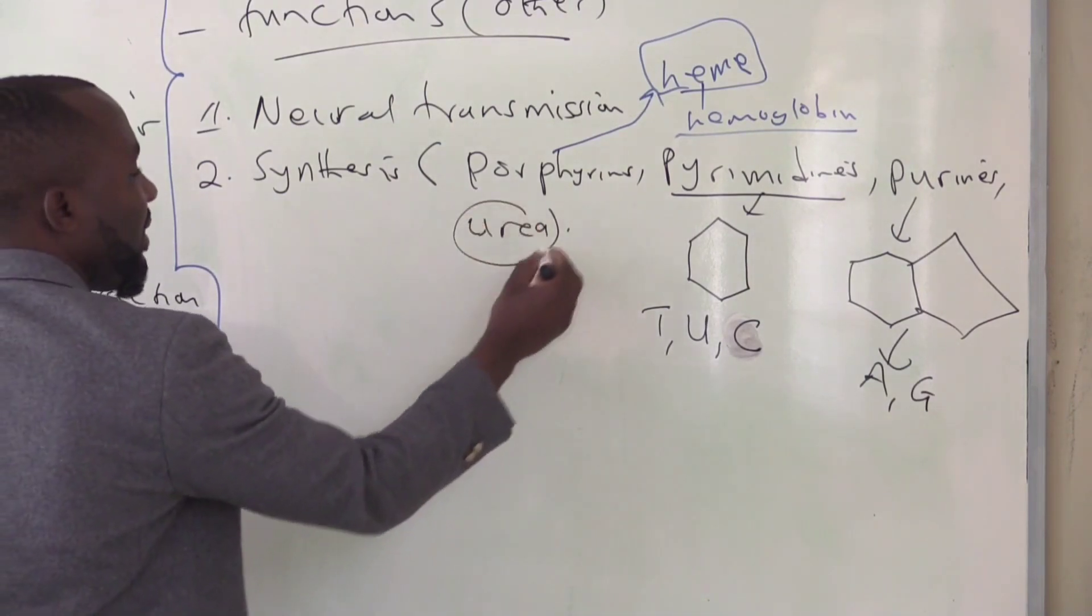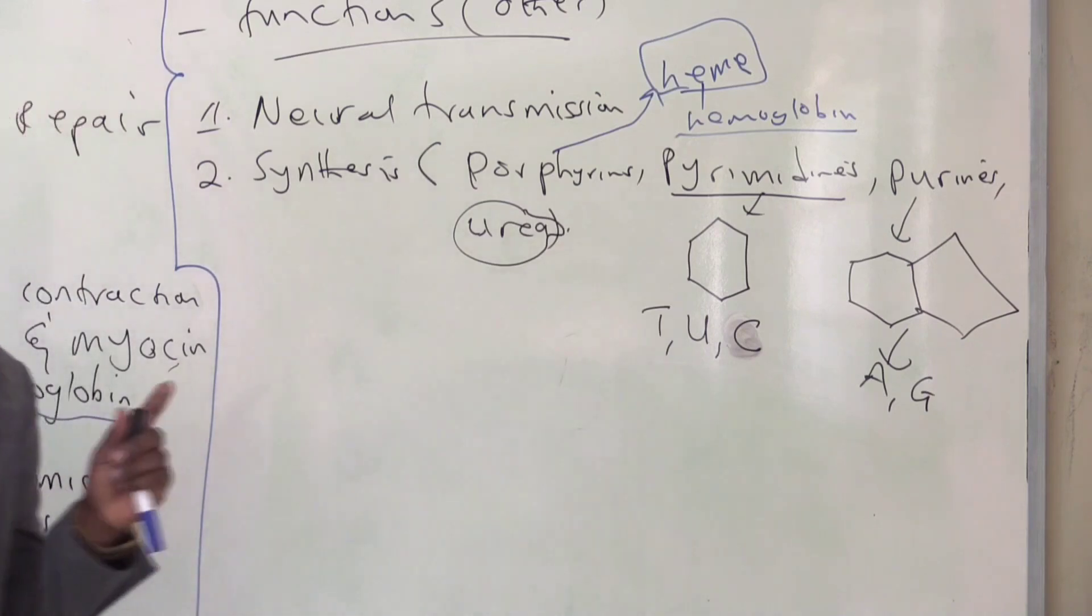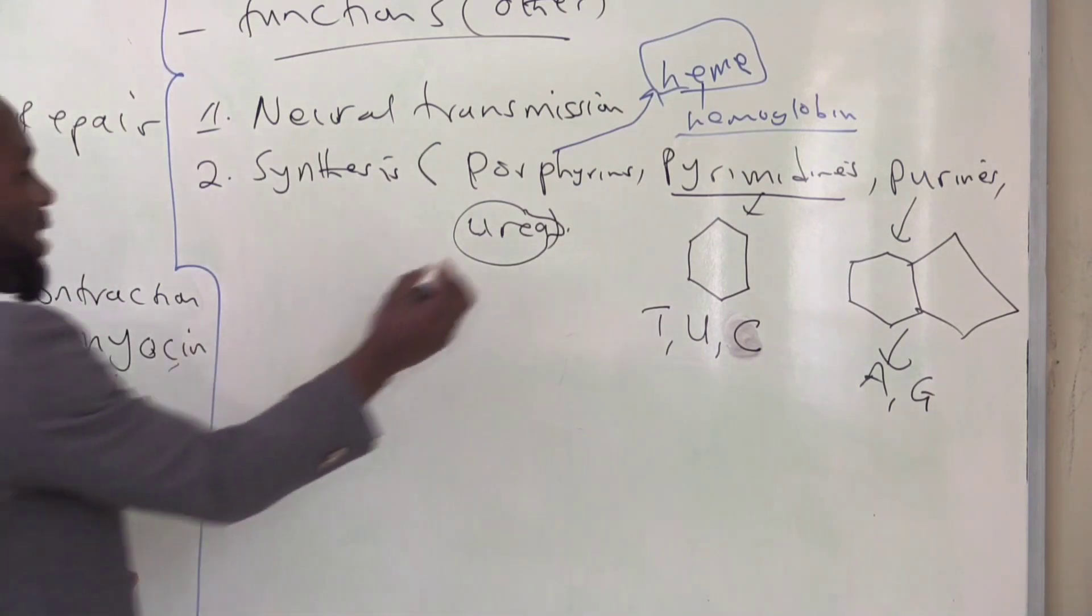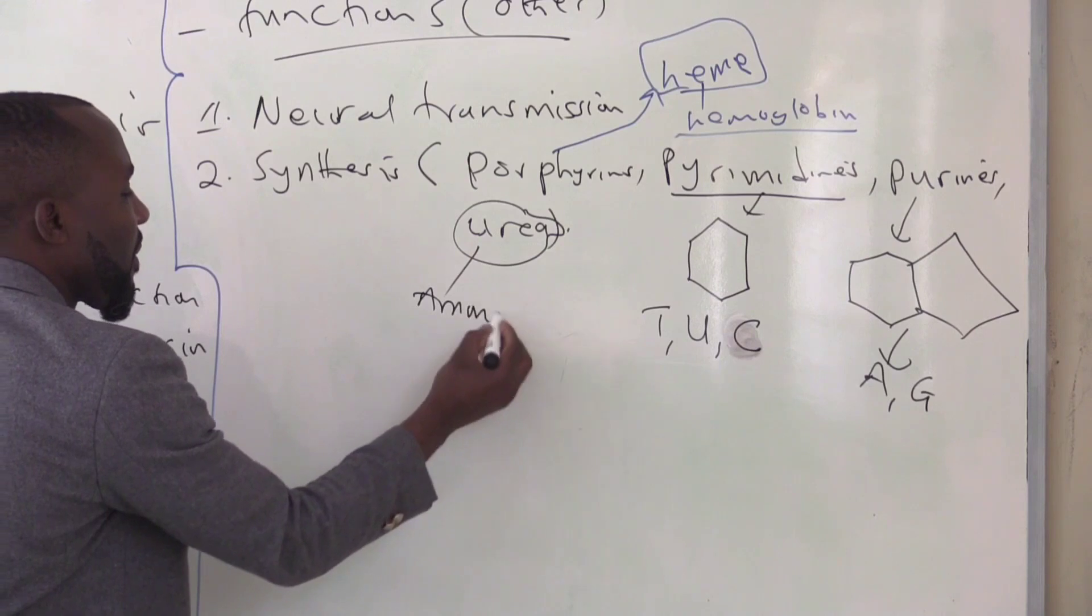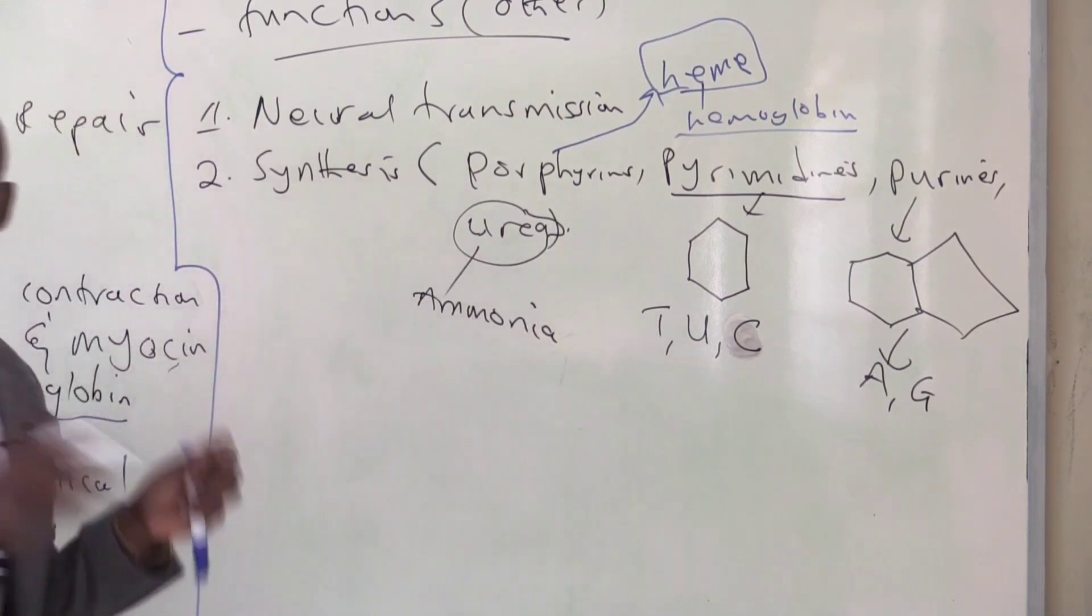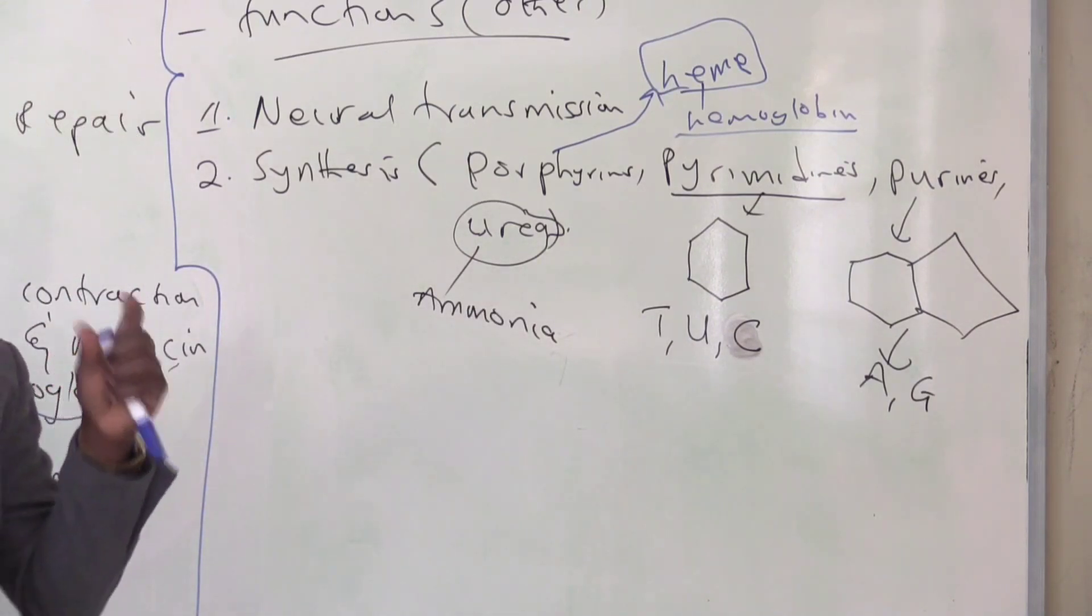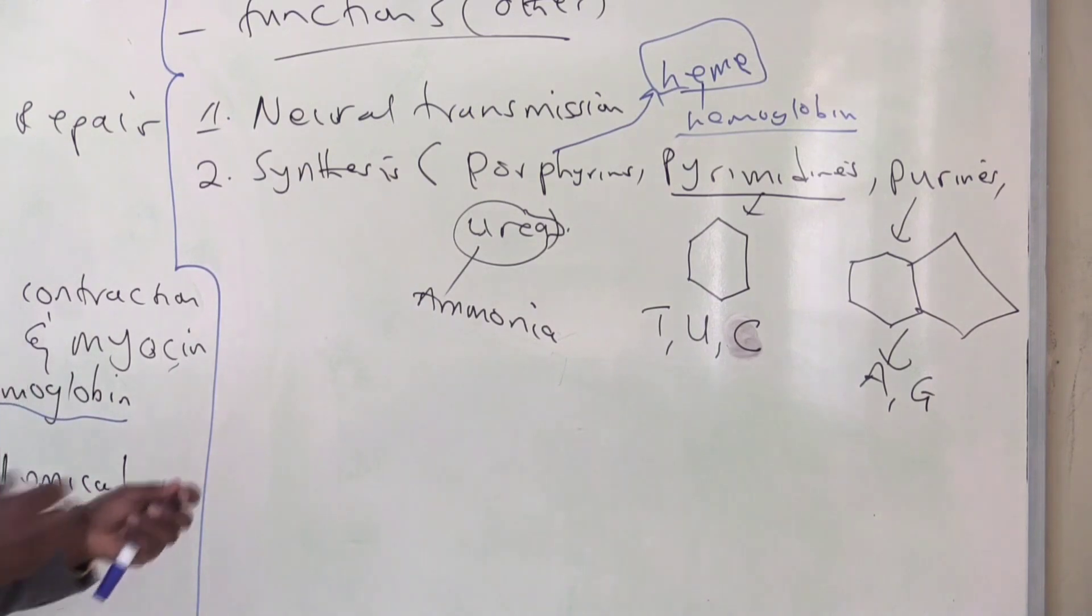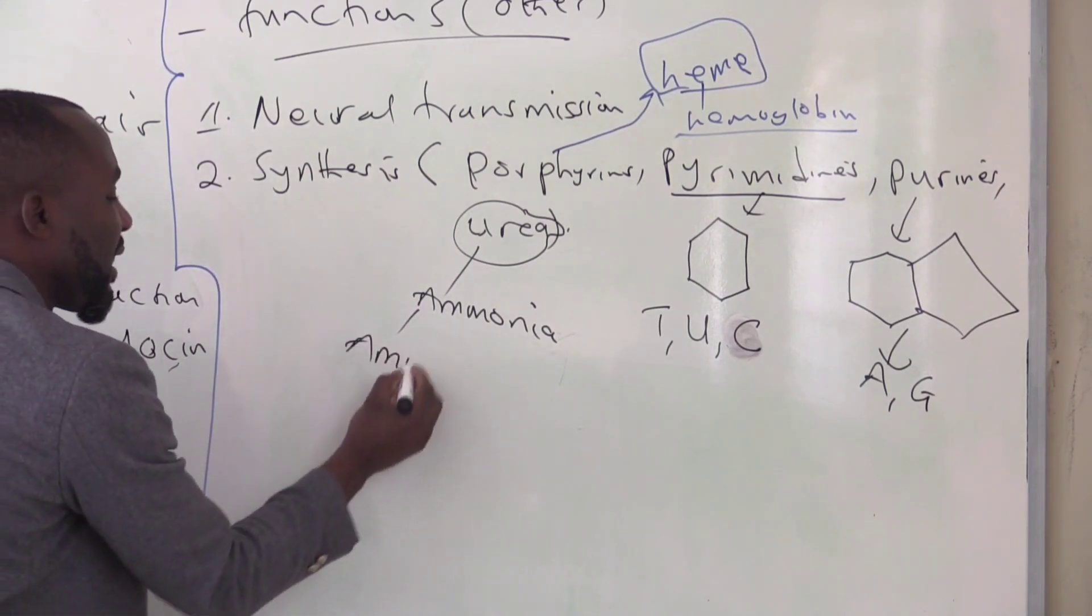Urea. We all know that the human body is designed to get rid of ammonia. Because if ammonia accumulates in the human tissue, it's able to cause what is called ammonia intoxication.